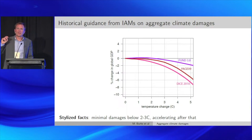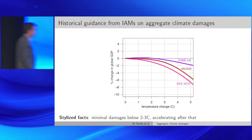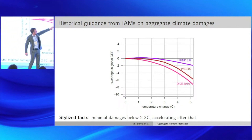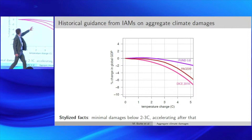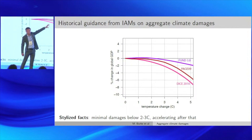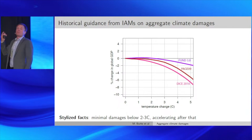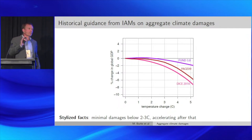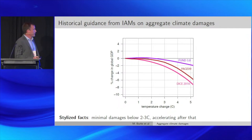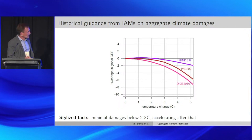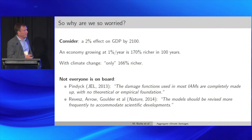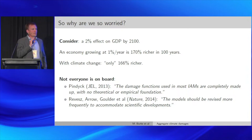A business-as-usual scenario right now — our best estimate is around three degrees Celsius of warming by 2100. If you go to three degrees Celsius and read off the plots: Nordhaus says we're going to lose about two percent of GDP; Toll says we're going to lose about zero percent — so no impacts out to three degrees Celsius, which is our best estimate of where we're headed given emissions trajectories and policy commitments. Minimal damages below two to three degrees, then perhaps accelerating after that.